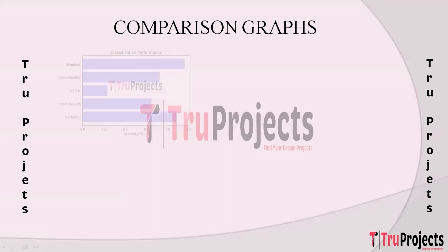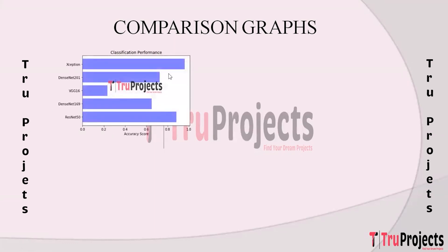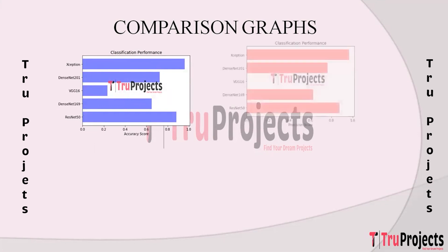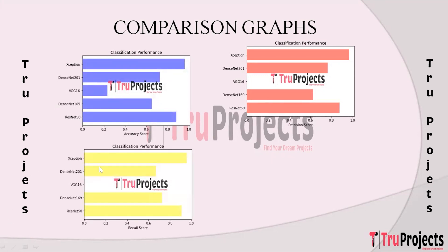The comparison graphs include a horizontal bar graph comparing accuracies of different algorithms, with accuracy scores on the x-axis and algorithm names on the y-axis. Accuracy measures the overall correctness of predictions, showing the percentage of correctly classified instances. A precision score comparison graph is also shown, where precision measures the accuracy of positive predictions, indicating how many predicted positives were actually correct.